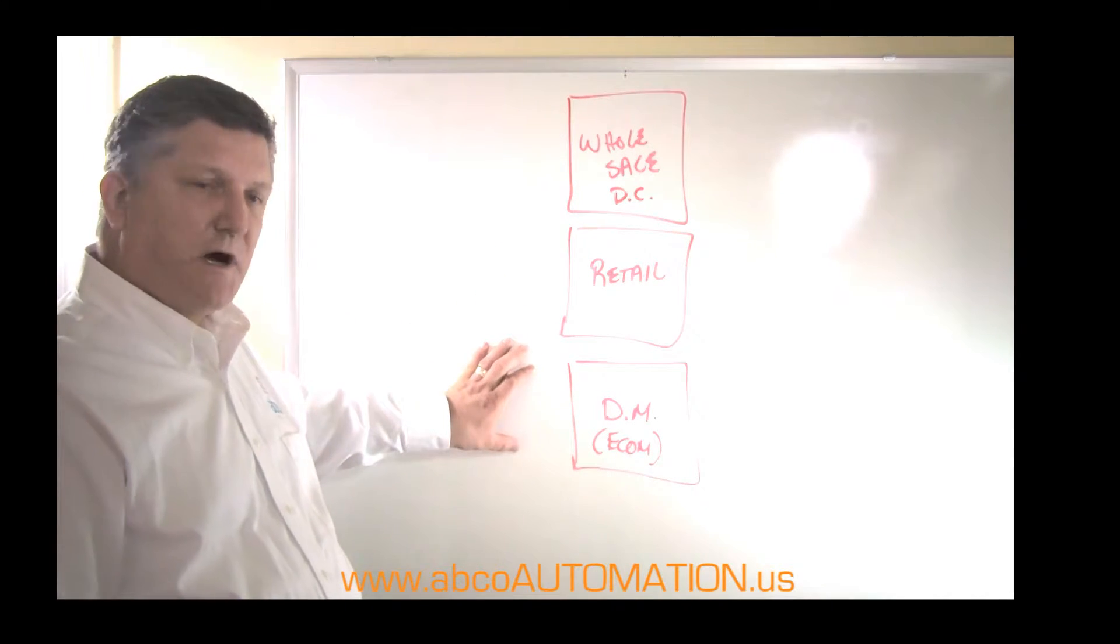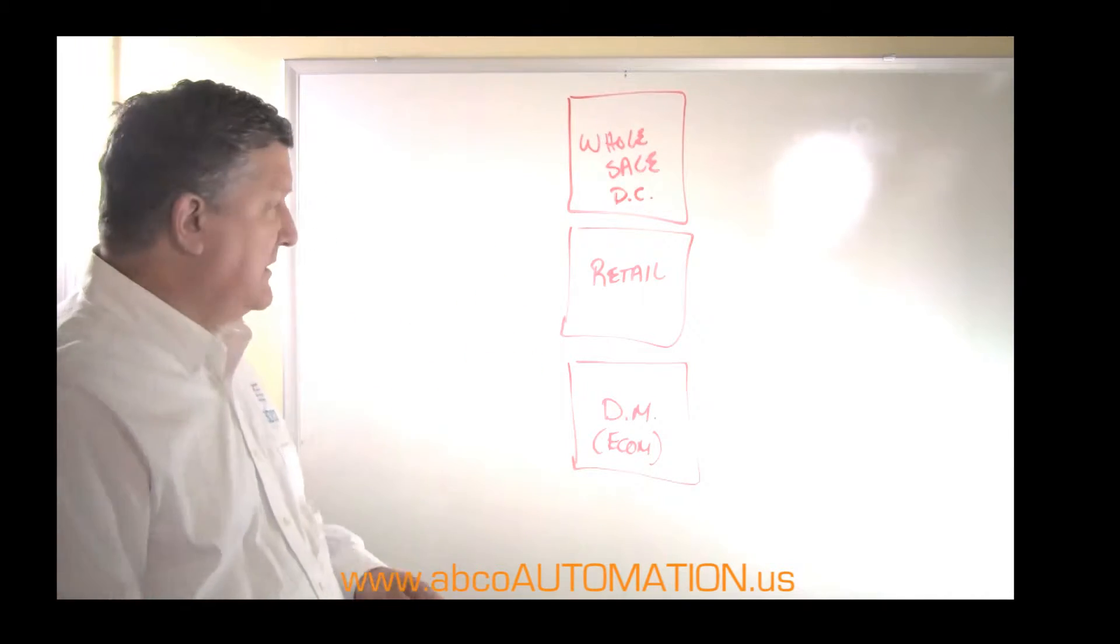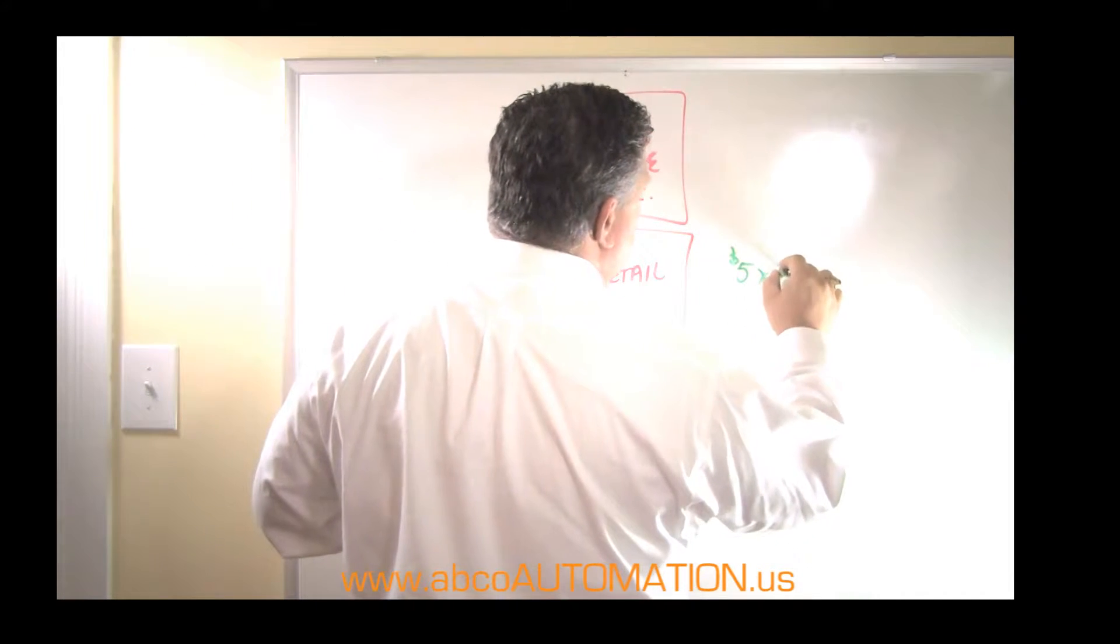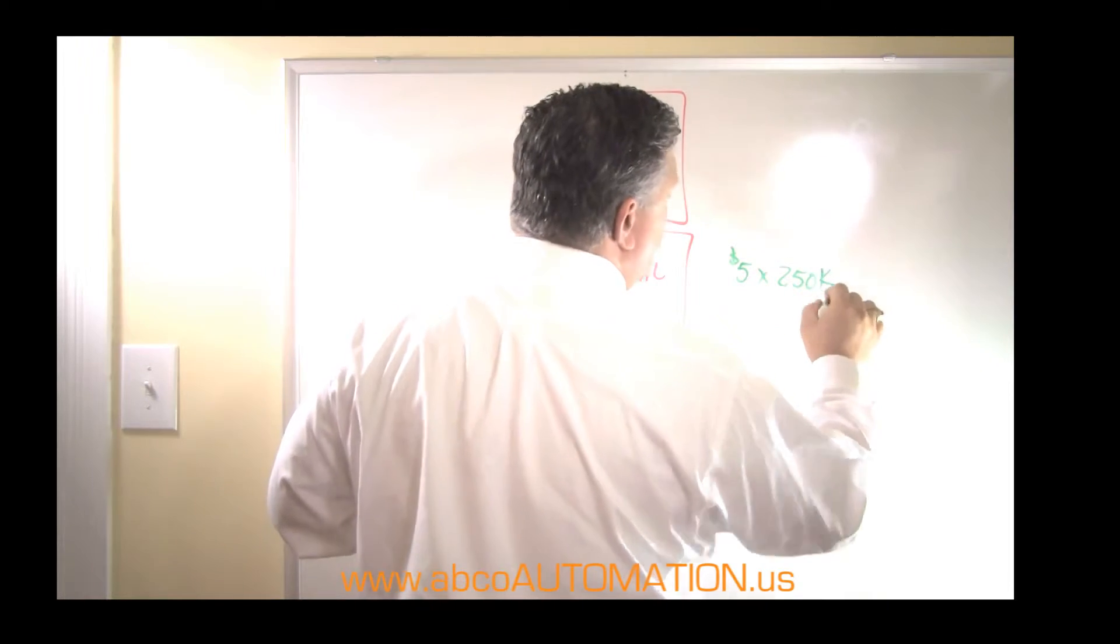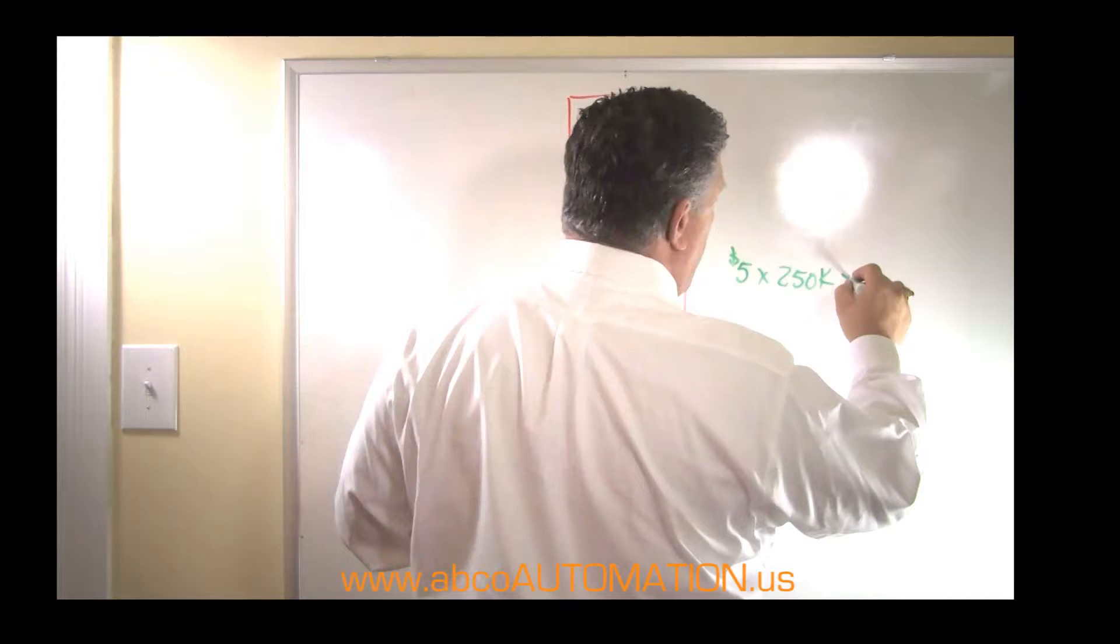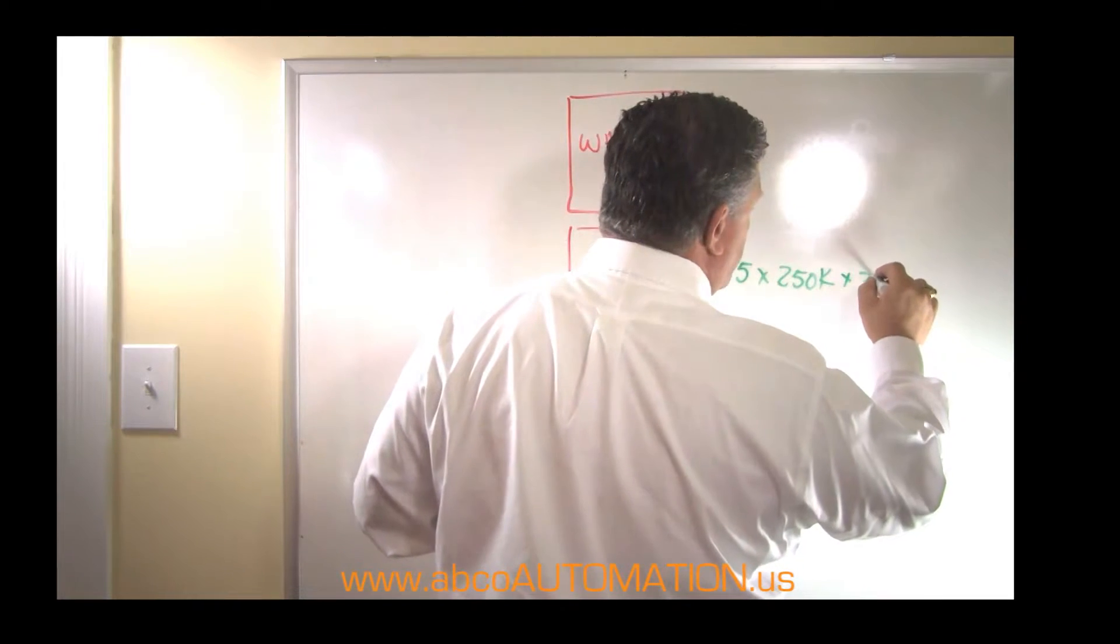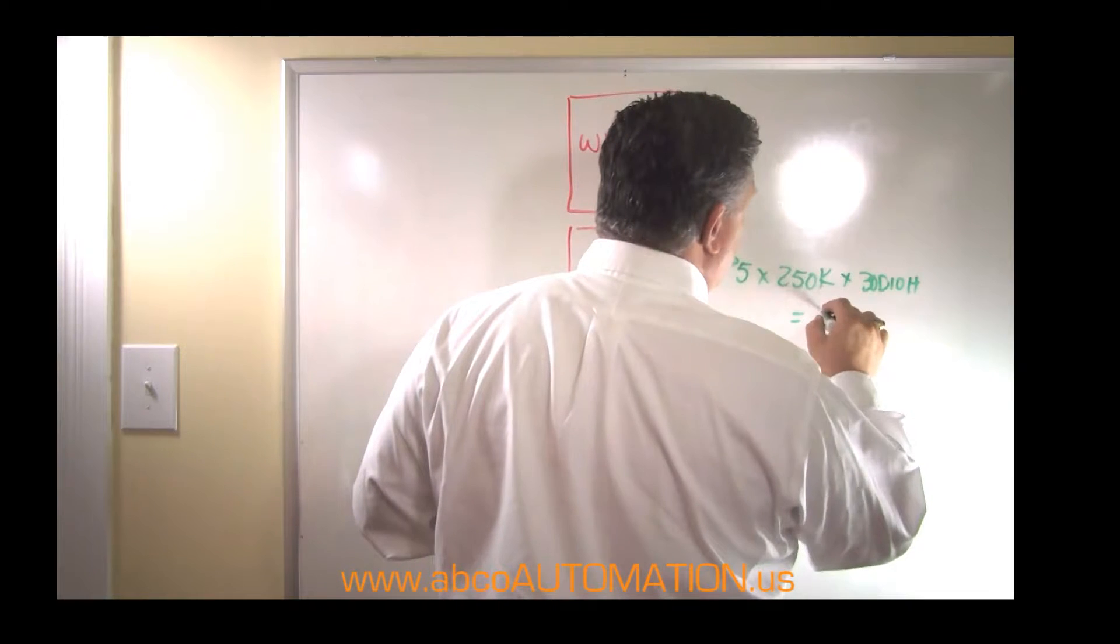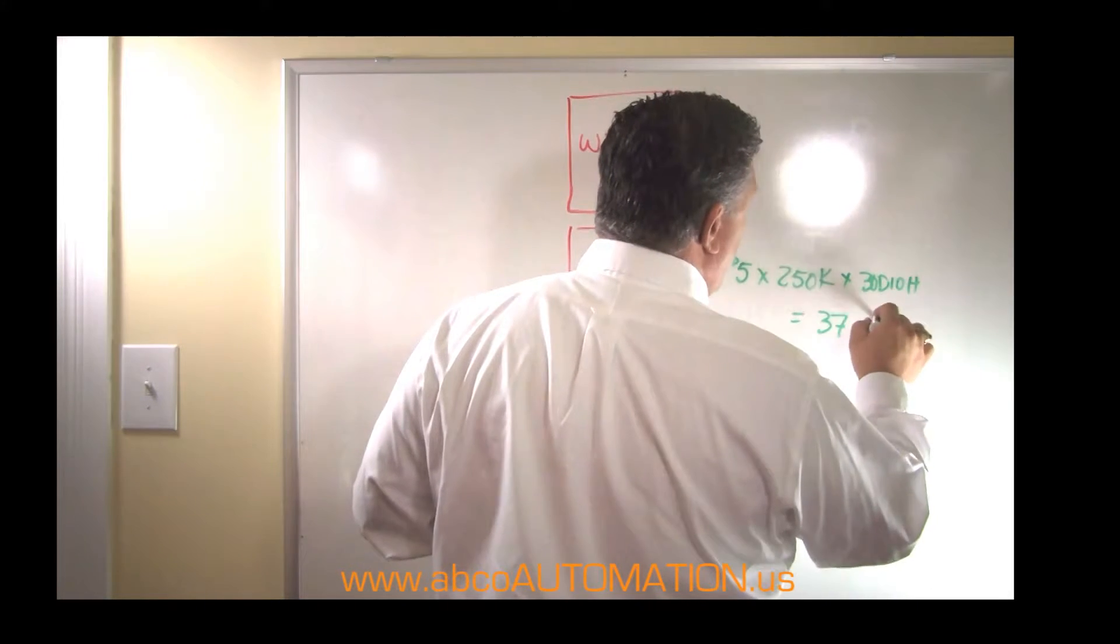What kind of costs are we talking about? Well, let's do the math. If our average product costs about $5 a piece and we sell, say, 250,000 pieces a day, and then you have to carry 30 days inventory on hand, that's 30 days inventory on hand, this works out to be about $37.5 million.